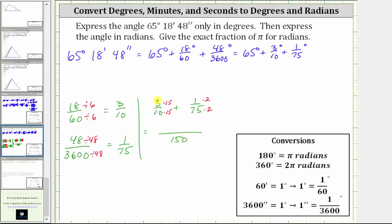and the numerator is three times 15, which is 45, plus one times two, which is two, giving us 47/150ths. And therefore we can express the angle as 65 and 47/150ths degrees. So this is the exact angle expressed only using degrees.